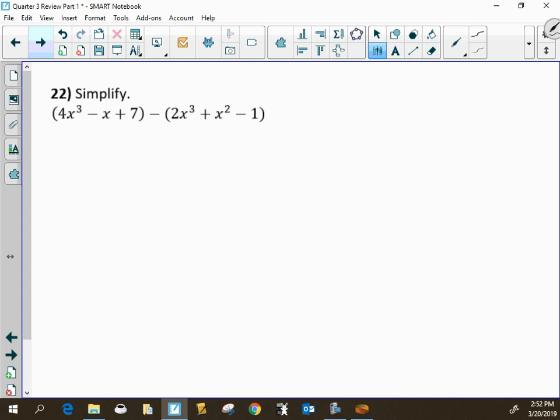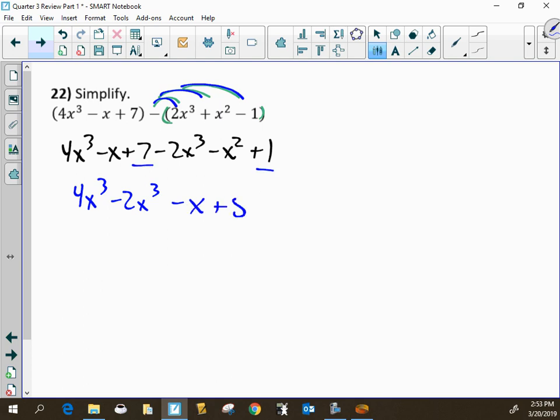For here, simplifying, remember if it's minus something in parentheses, you have to distribute the negative. So this will be 4x cubed minus x plus 7 minus 2x cubed minus x squared plus x. Because when you distribute the negative, you multiply everything inside the parentheses by negative 1. So then we combine like terms.